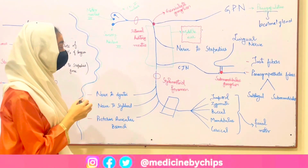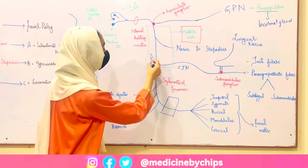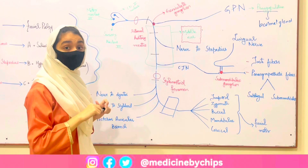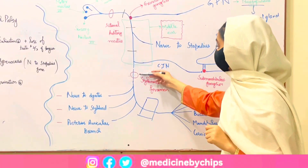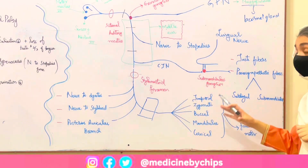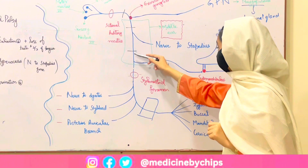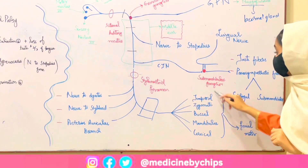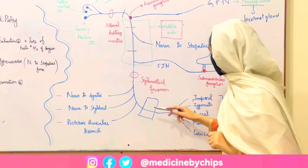We have covered the course of the facial nerve. Now we will see lesions at different levels: at the stylomastoid foramen, above the chorda tympani nerve, above the nerve to stapedius, and at the external genu. If the lesion is at the stylomastoid foramen, all structures supplied by the nerve below that level lose their function, resulting in Bell's palsy or facial palsy. If the lesion is above the chorda tympani, taste sensation is lost, salivation is lost, and there is no facial muscle control.